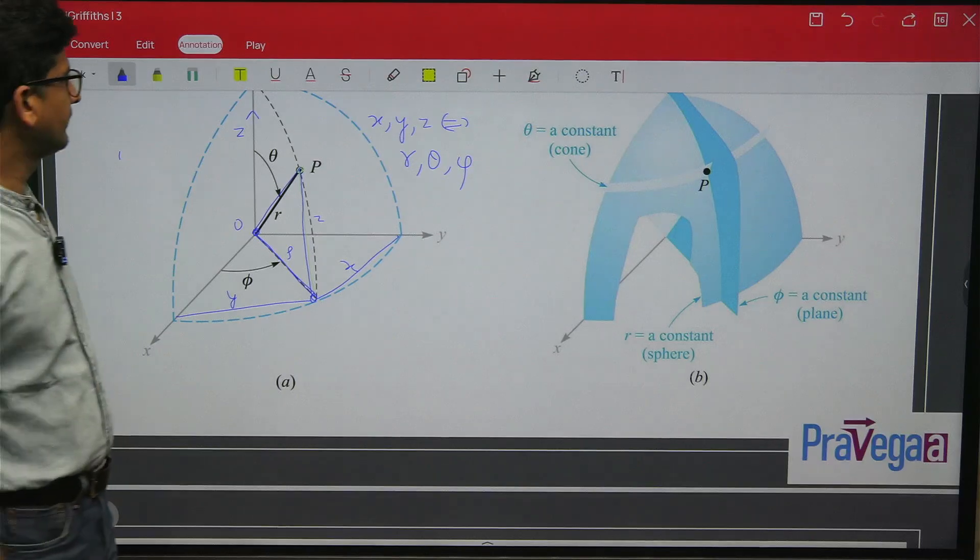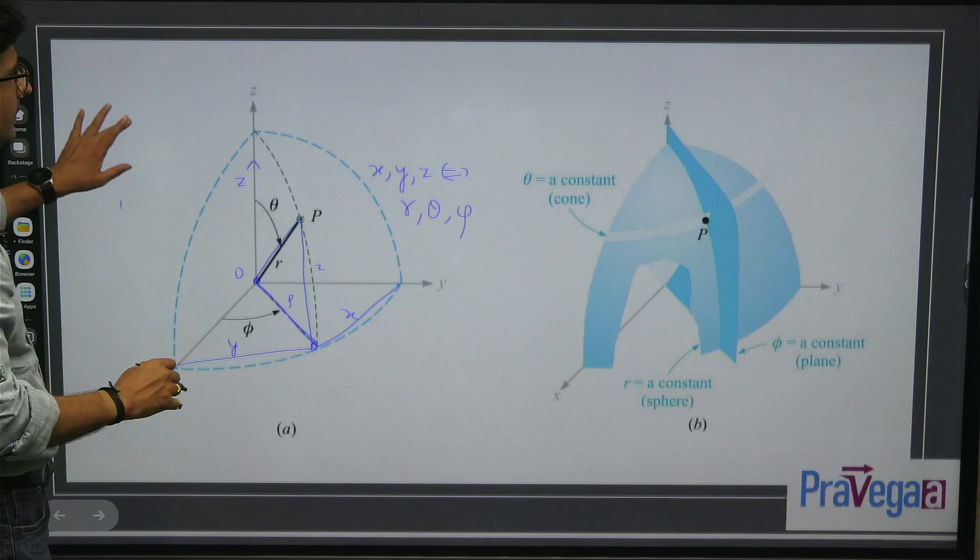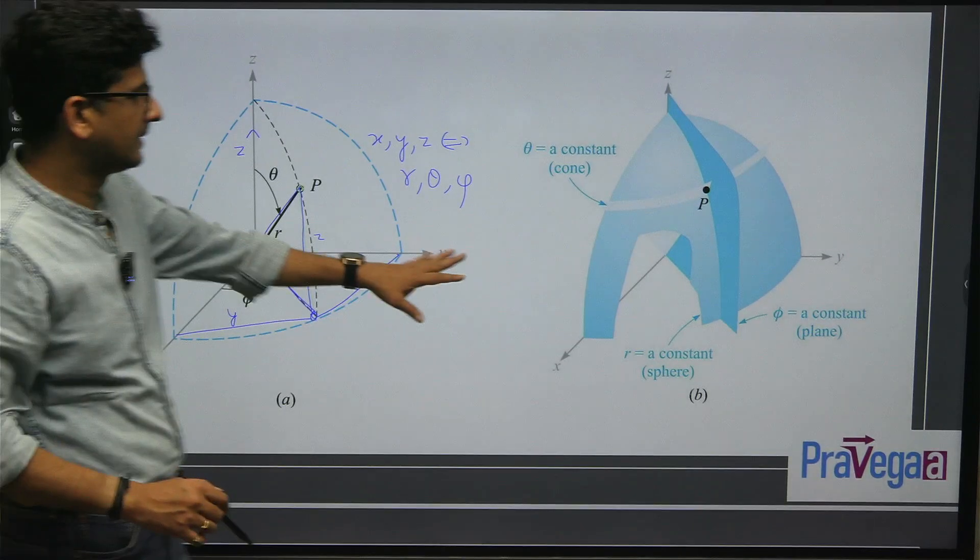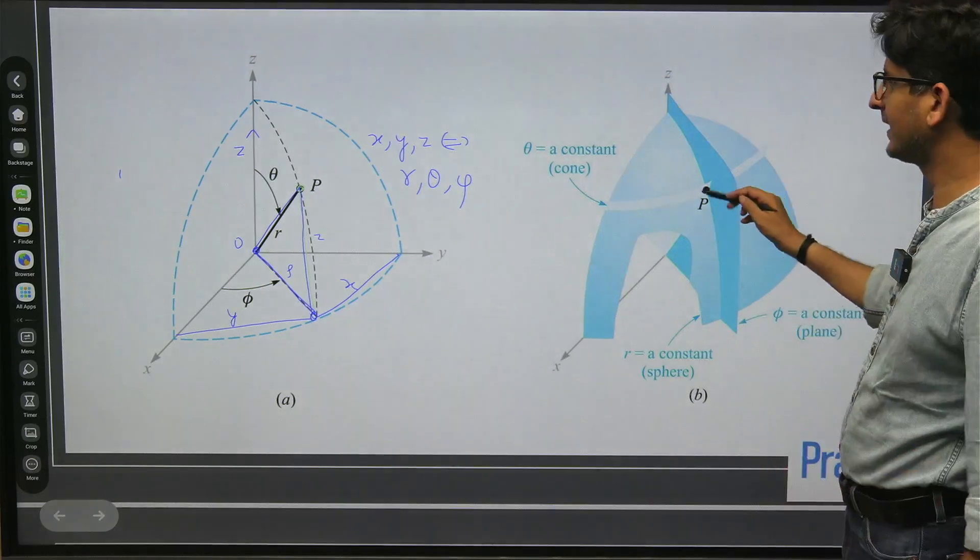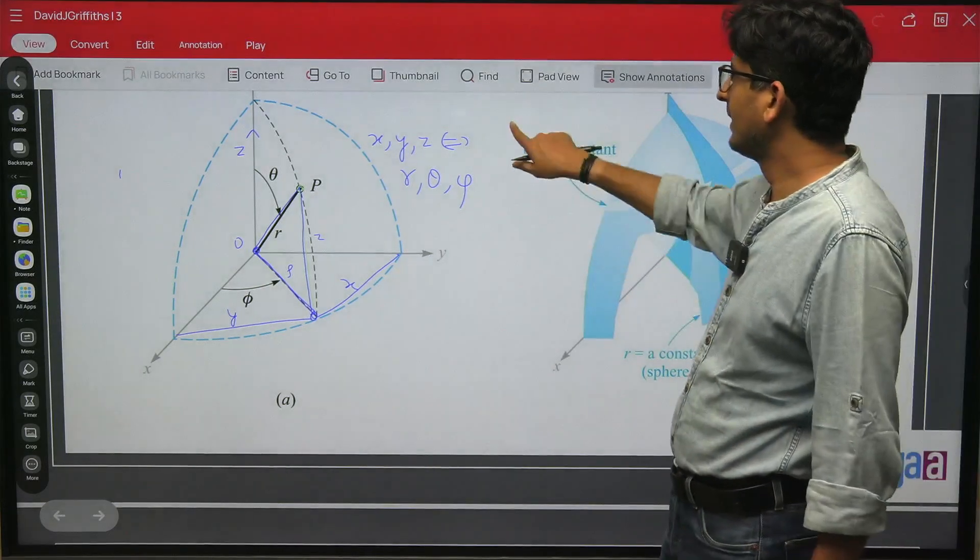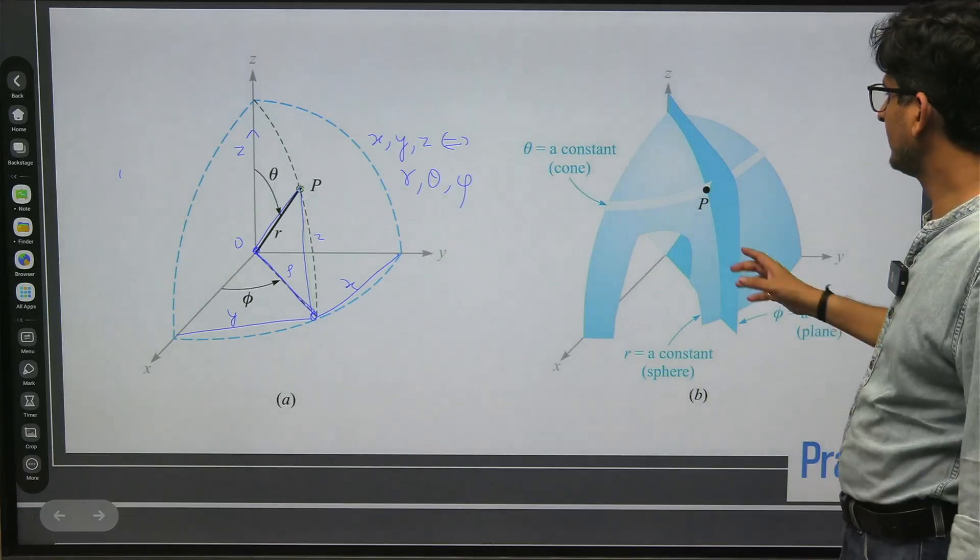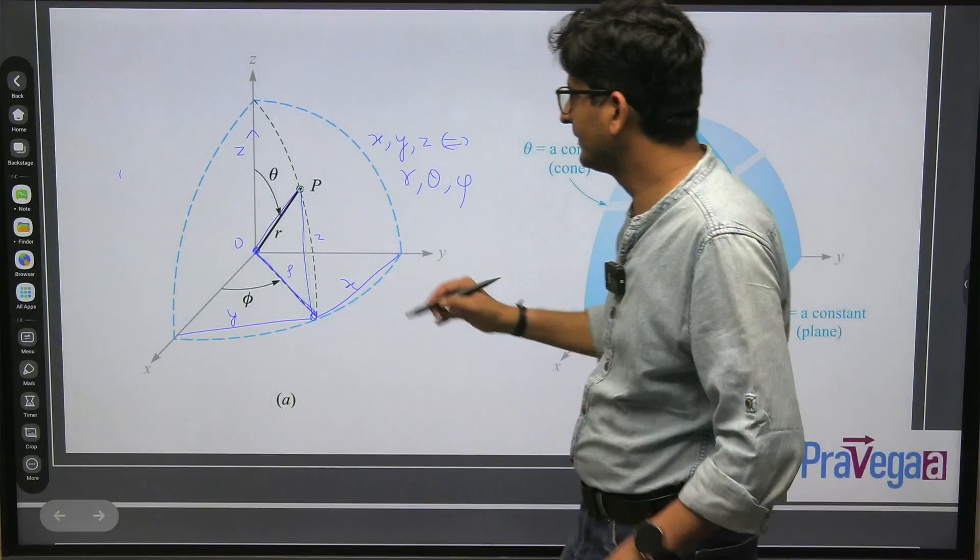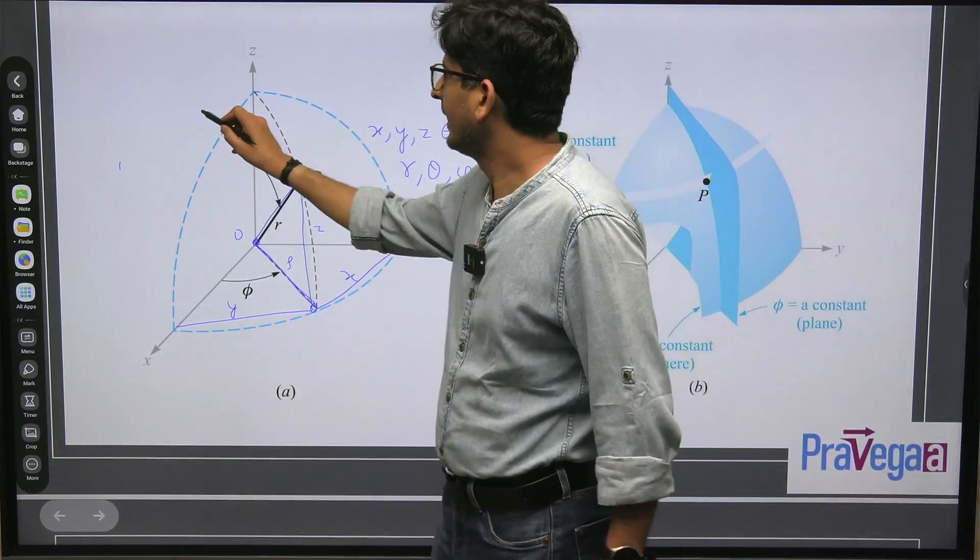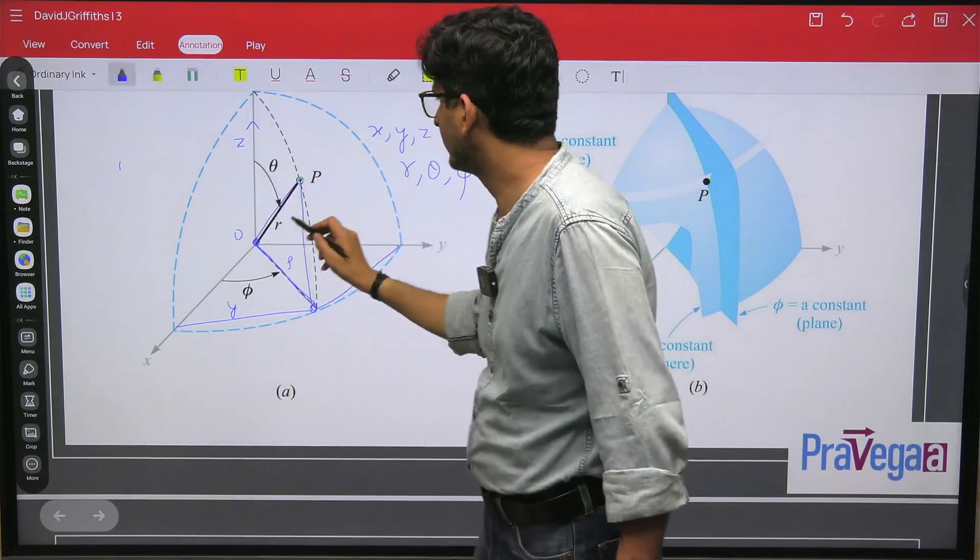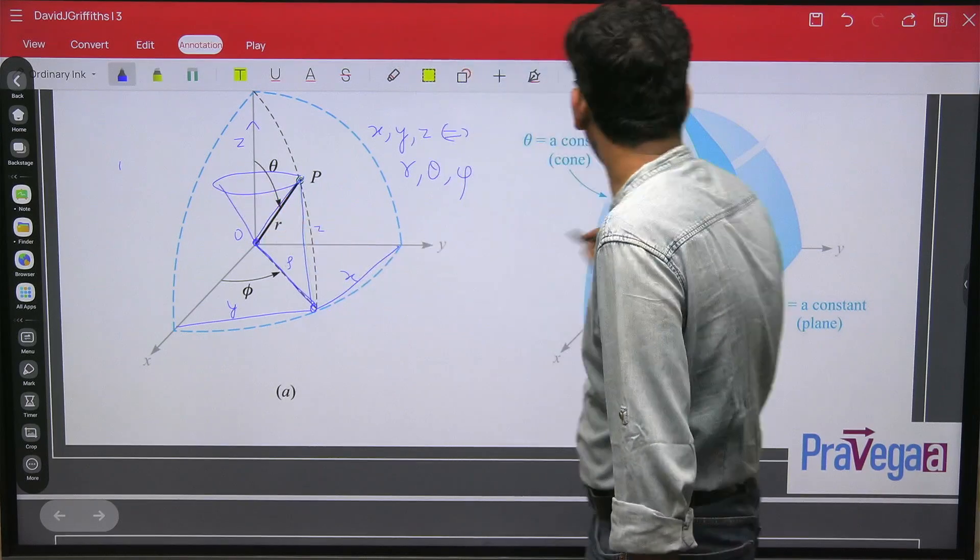Now like we represented in the previous case, we represented this by three perpendicular surfaces. So in this case, what will be the three perpendicular surfaces passing through the point P? One will be the cone, the conical surface, which you can see. You can make it like this and connect it. If I take the annotation again, this will be the cone, which you can see here.